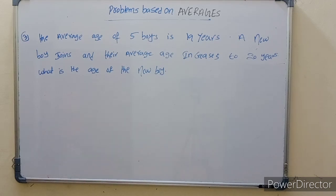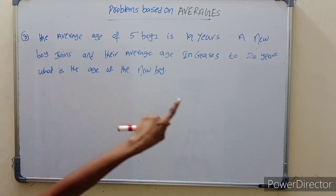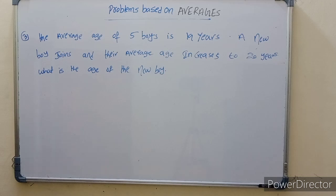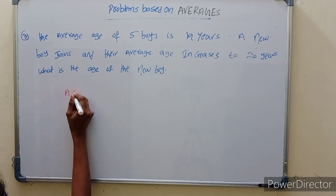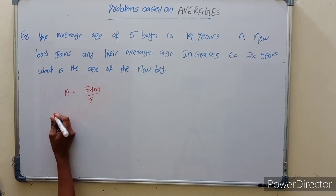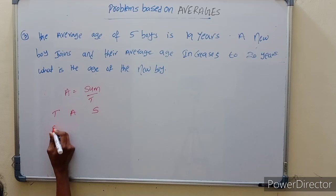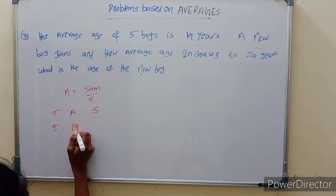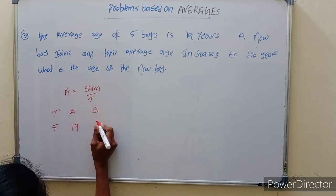Next problem: the average age of a group of 5 persons is 19 years. One new person joins, increasing the group to 6. What is the age of the new person? Sum of 5 persons equals average into total: 5 into 19 equals 95.